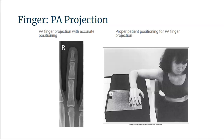Image analysis guidelines for the PA finger projection state that the soft tissue width and mid-shaft concavity should be equal on both sides of the phalange. There should be no soft tissue overlap from the adjacent digits.